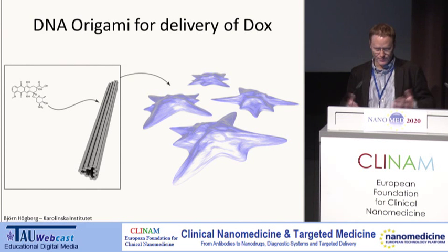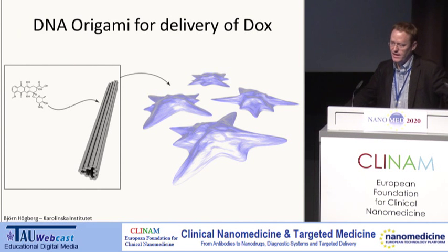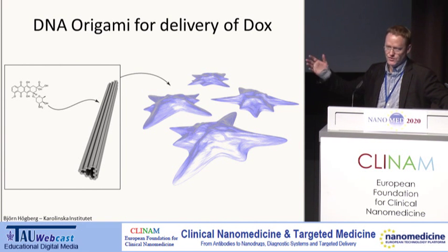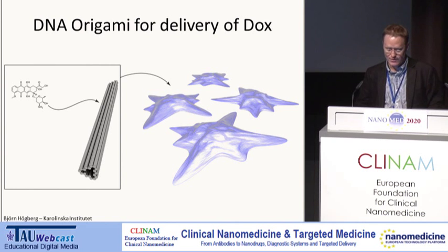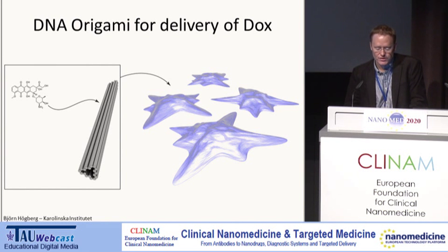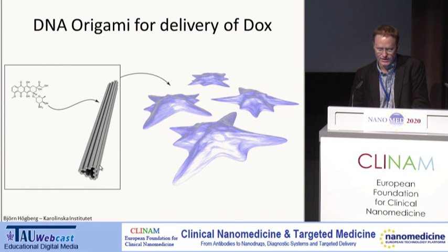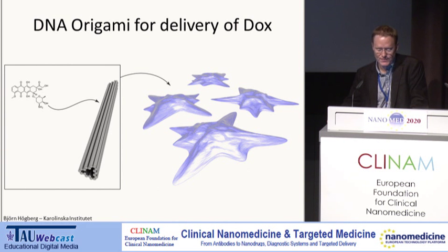With all the possibilities given to us by DNA nanotechnology to pattern stuff and to position targeting ligands, shouldn't we be able to do even better using DNA origami? So in my lab, we took the approach of creating DNA origami structures — like this board-like shape — loading them with doxorubicin, and then studying cell uptake.